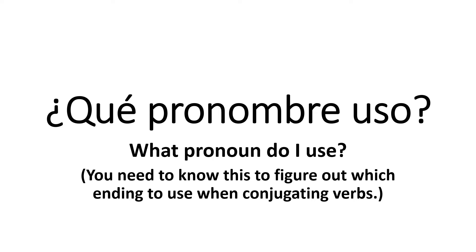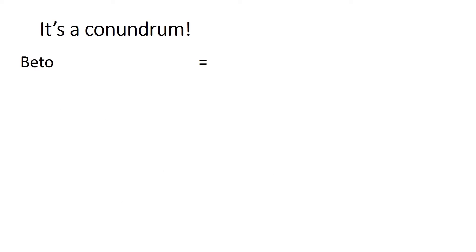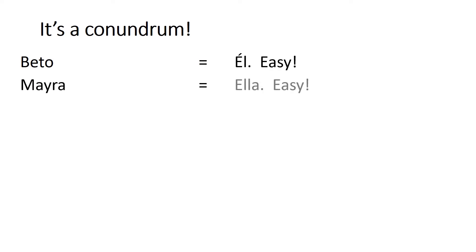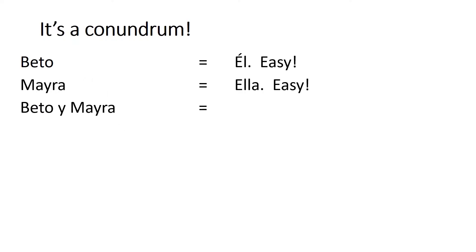For example, if I'm talking about Beto, then I know that the pronoun I would use is él. That's easy. Or if I were talking about Mayra, then I know that the pronoun I would use is ella. No problem. And if I were talking about Beto y Mayra, I know that I'd use ellos.